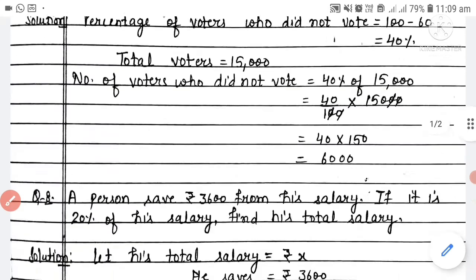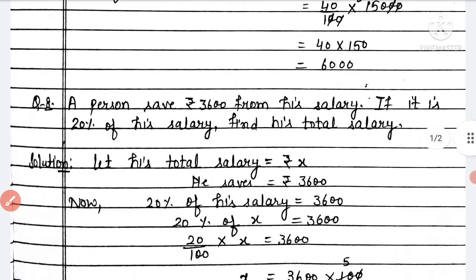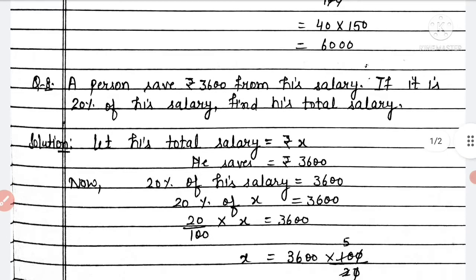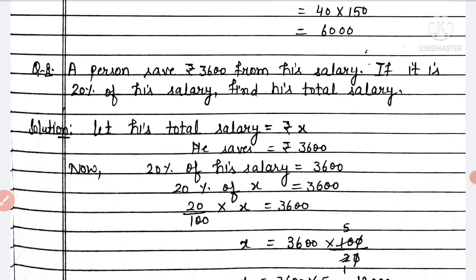Now Question 8: A person saves rupees 3,600 from his salary. A person has saved 3,600 from his salary. If it is 20 percent of his salary, we need to find the total salary. So let his total salary be x rupees. He saves 3,600. The saving percentage is also given as 20 percent. Therefore, 20 percent of his salary equals 3,600.